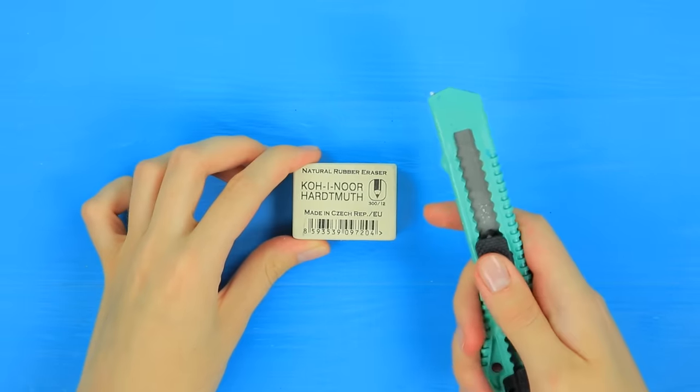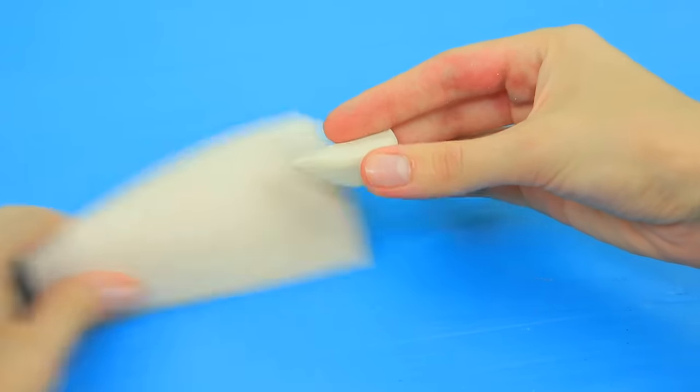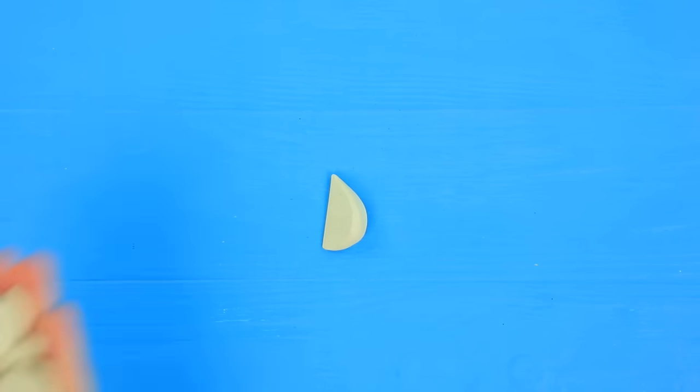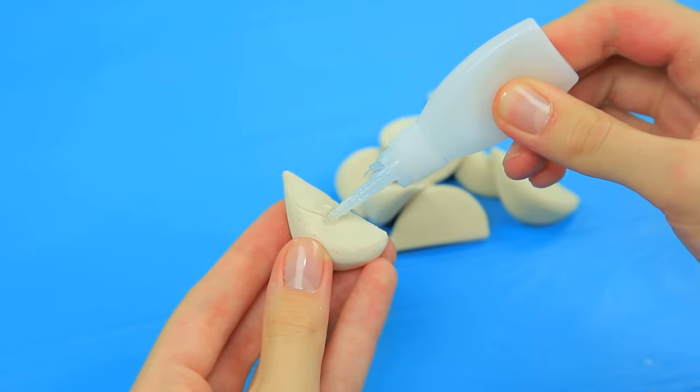Shape an eraser into a clove of garlic. Polish the bumps with sandpaper. Make a few cloves. Glue them together. Shape a head of garlic.